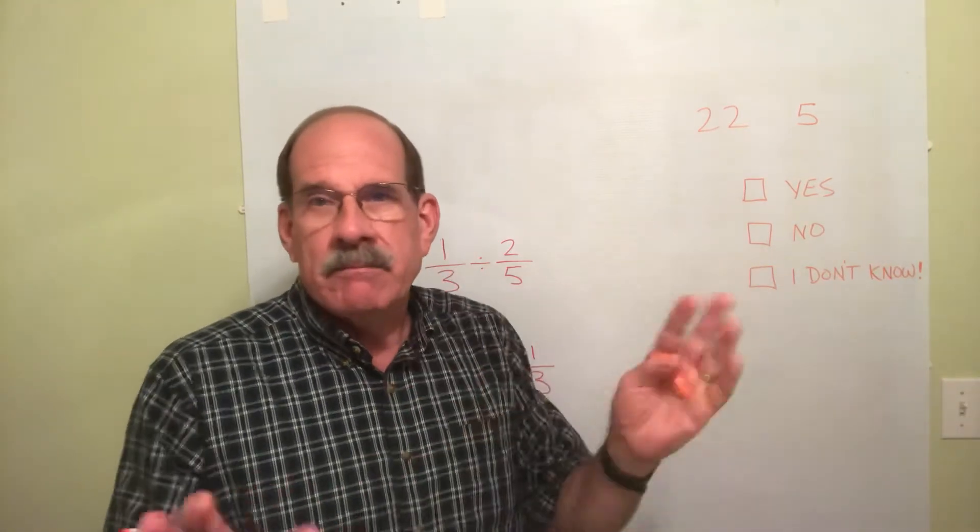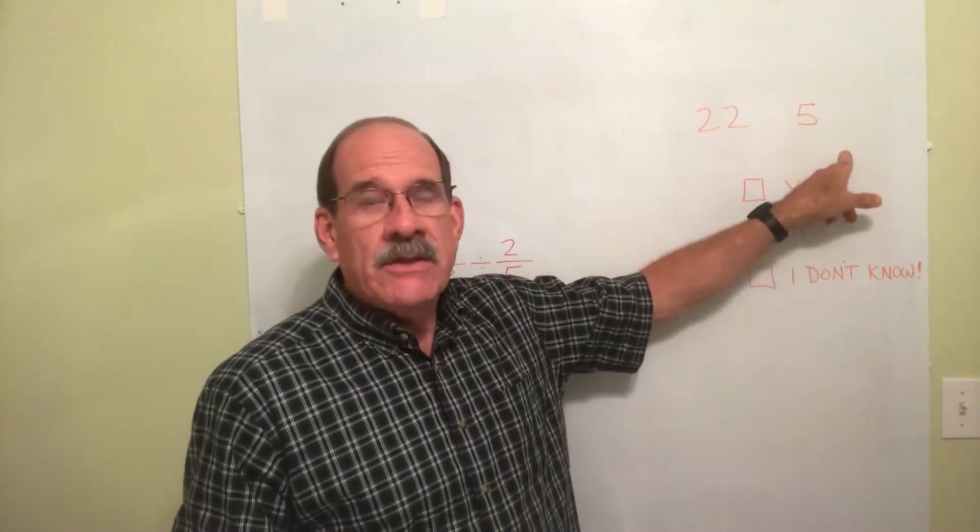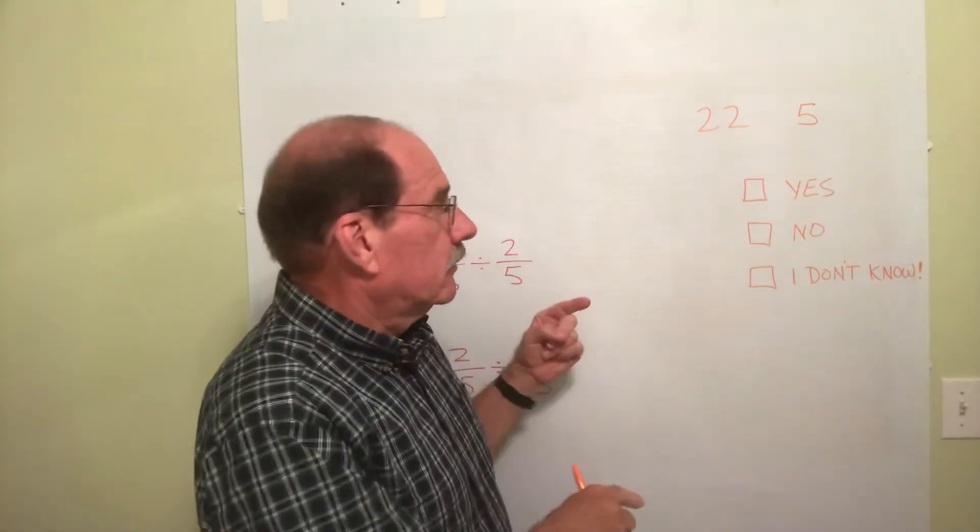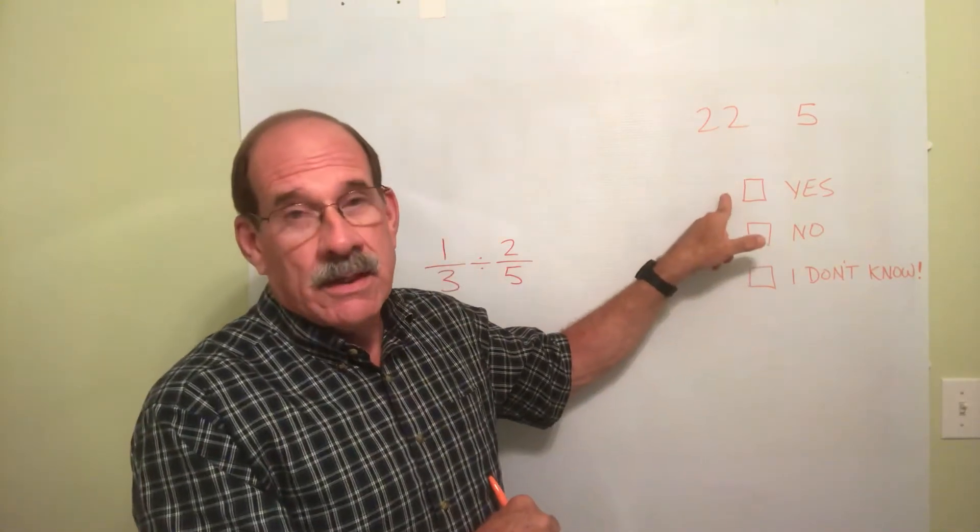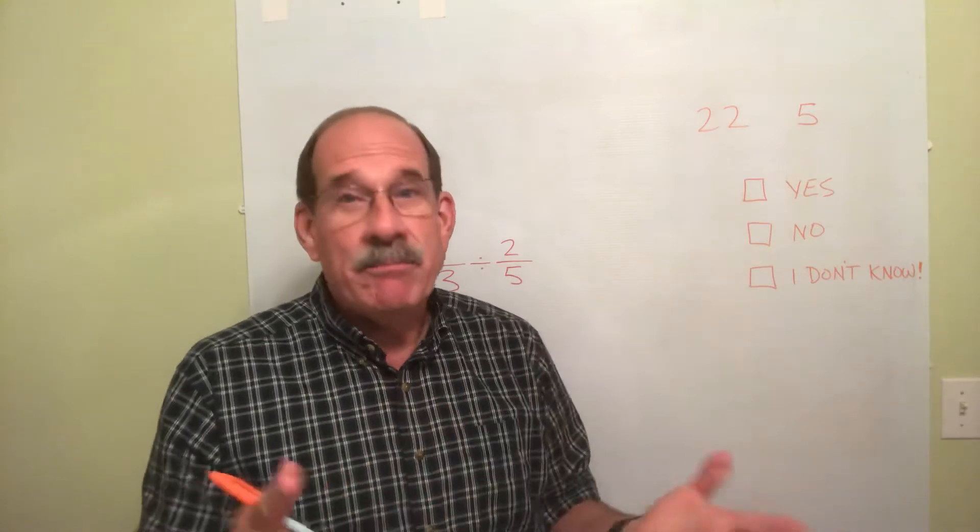Either way, that'd be okay. What if you were subtracting? 22 minus 5, is that the same thing as 5 minus 22? Does the order matter? Yes, it does. You must know which one comes first, which one is next. That's a big, big thing.